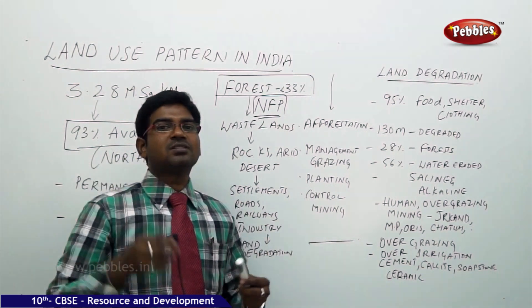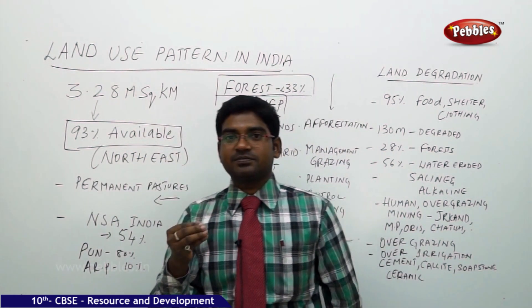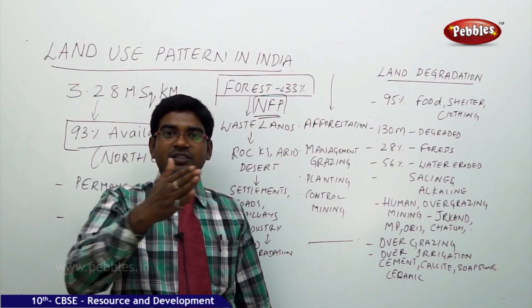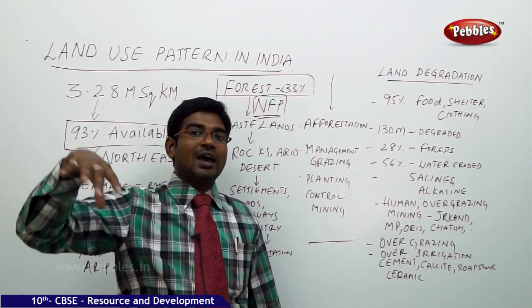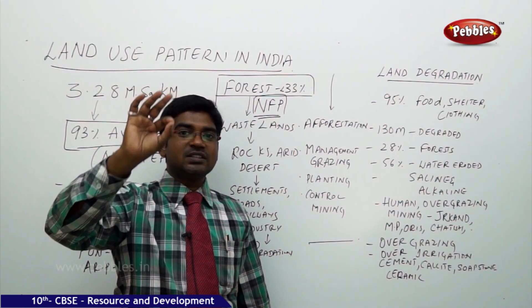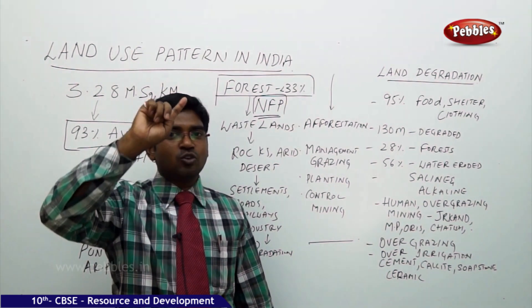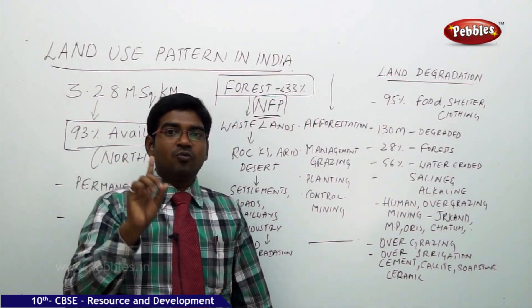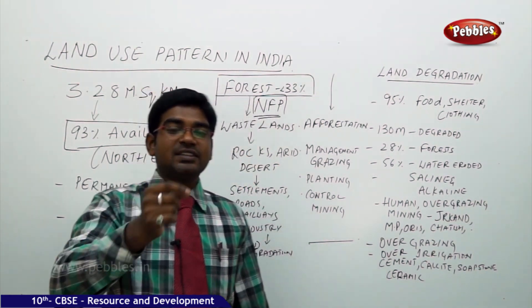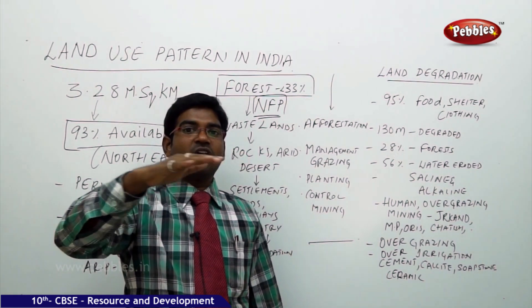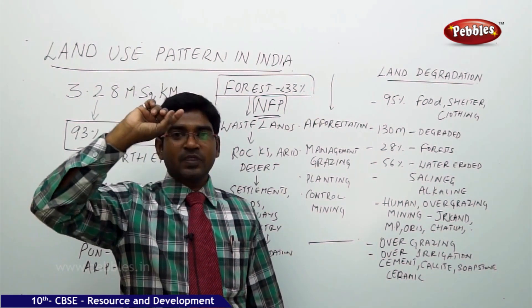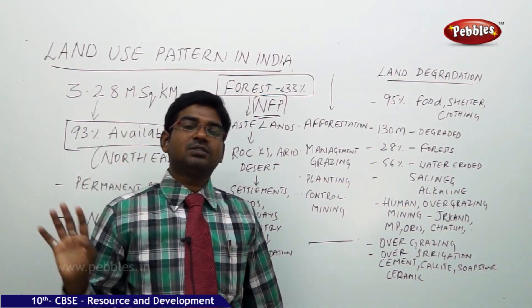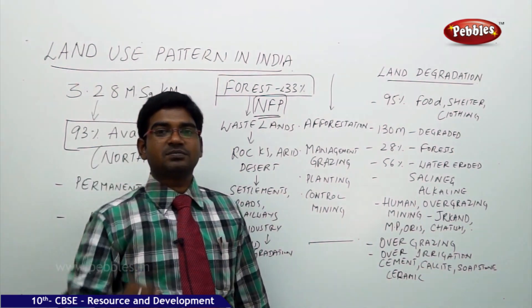Why do we require this much forest? National scientists who studied climatic conditions found that when 33% of the land is covered with forest, it gives the entire land good climatic conditions — proper seasonal cycles, monsoons coming on time, good crop growth, and stable climate. It results in reduced temperatures and does not affect the ozone layer or cause global warming.